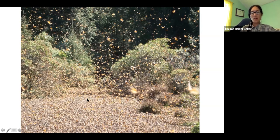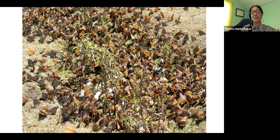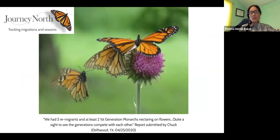In this last picture they're puddling — there's some moisture on the ground and they are getting the needed moisture to drink, just to keep up their body conditioning enough so that they can start heading north again when the warm weather comes in March.